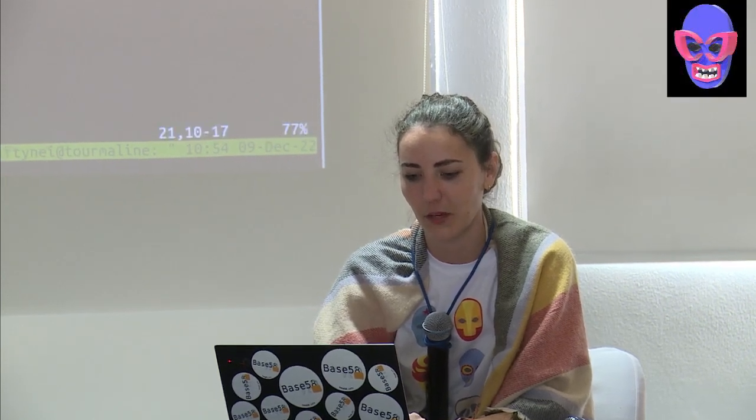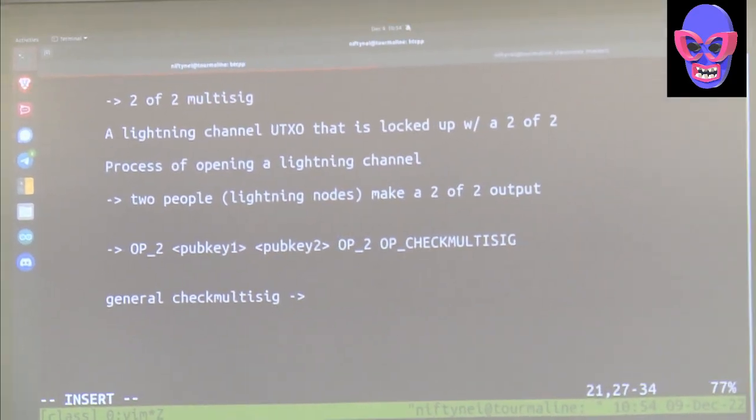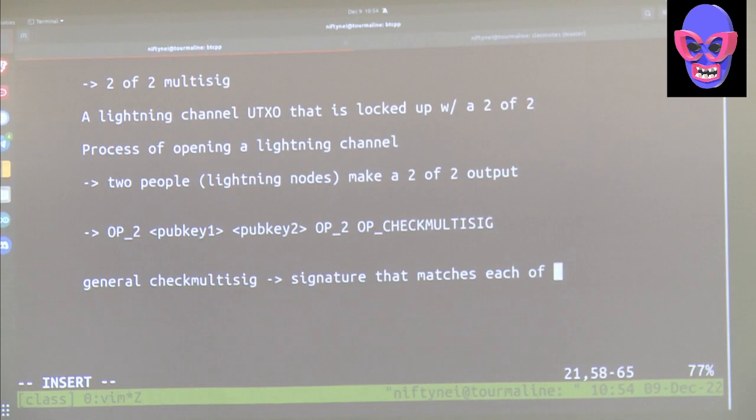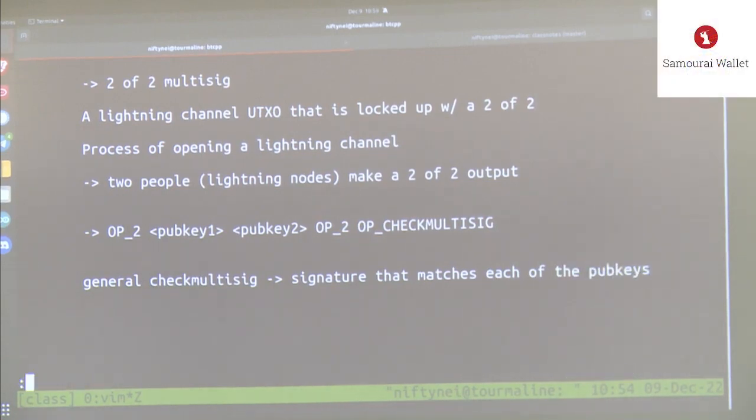This is the script we're going to put on-chain, and you'll notice we're missing pub key one and pub key two — one from each participant. The general idea behind OP_CHECKMULTISIG is that you need a signature matching each pub key. Each party gives you a pub key, you put it into the contract, lock the money on-chain, and it can't move unless both pub keys sign off.